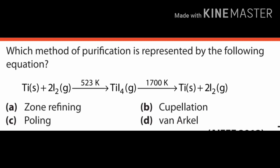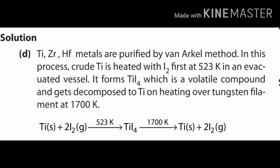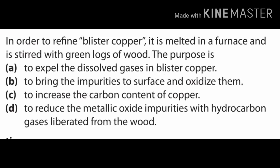Answer is D — Van Arkel method. It is an example of vapor phase refining in which titanium is purified by adding iodine; it vaporizes as TiI₄, and on further heating TiI₄ decomposes to give back pure Ti. This method can also be used for zirconium and hafnium.